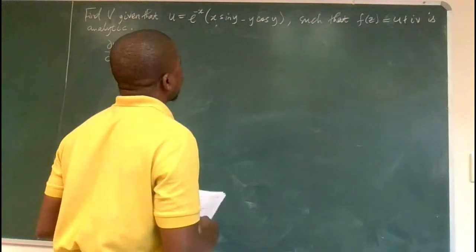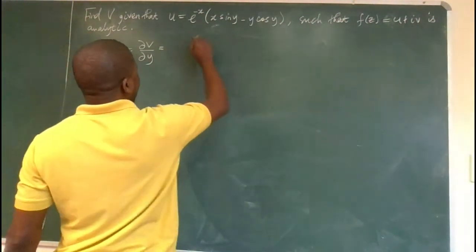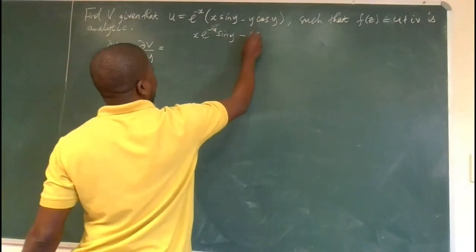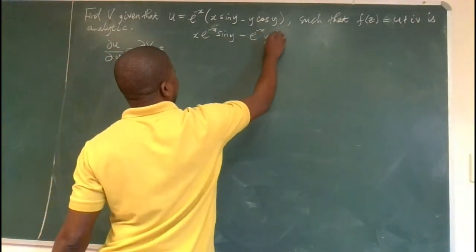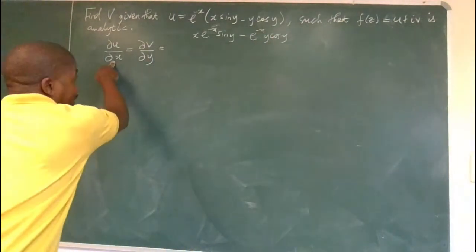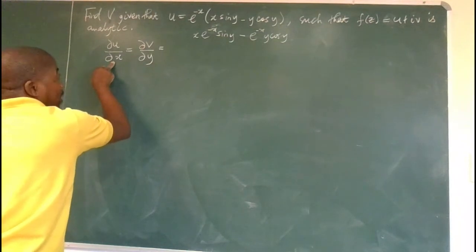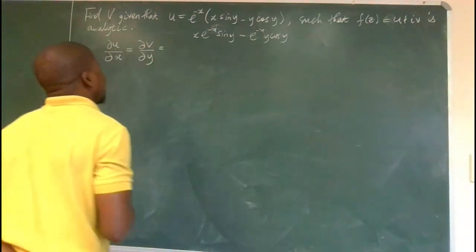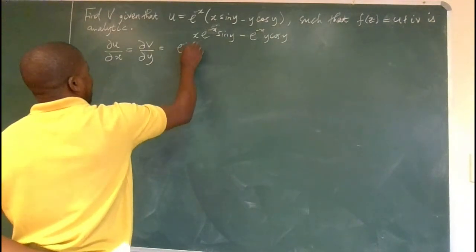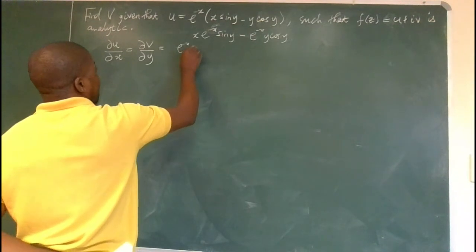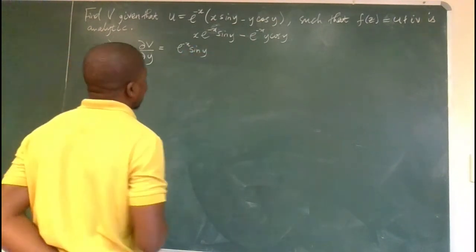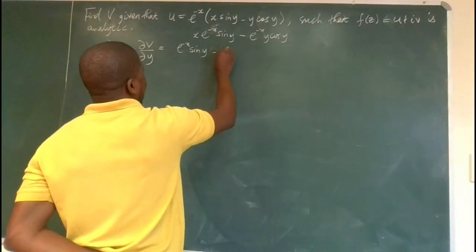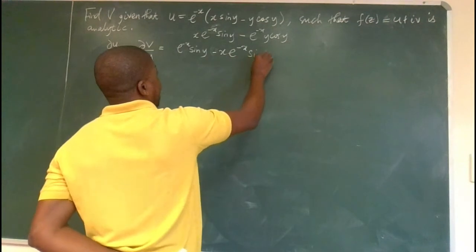Let's do the differentiation. If I expand the brackets, I have xe^(-x)sin(y) - e^(-x)y·cos(y). Differentiating with respect to x, taking y to be constant, this is a product, so using the product rule: e^(-x)sin(y) minus xe^(-x)sin(y).